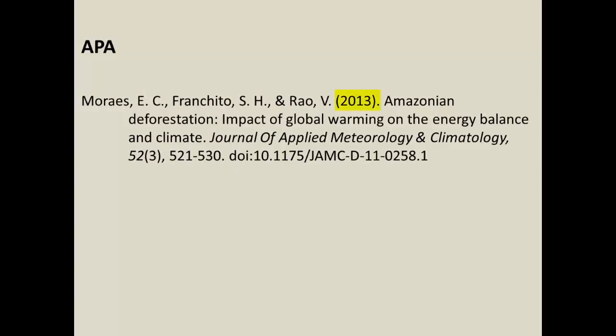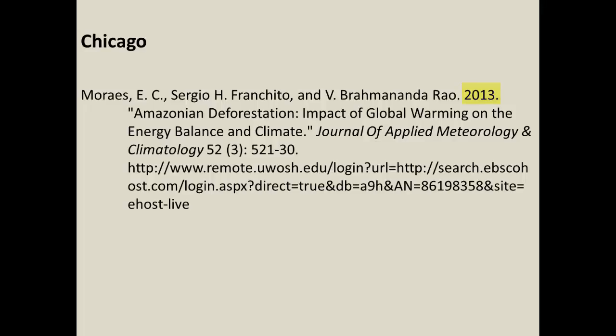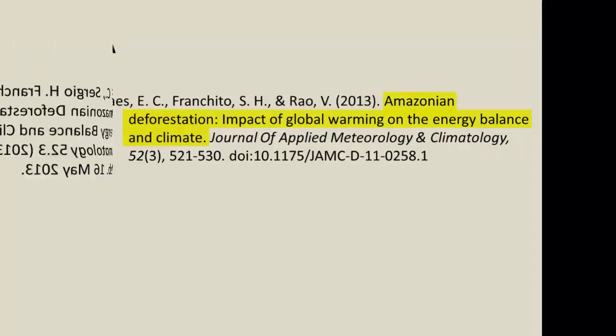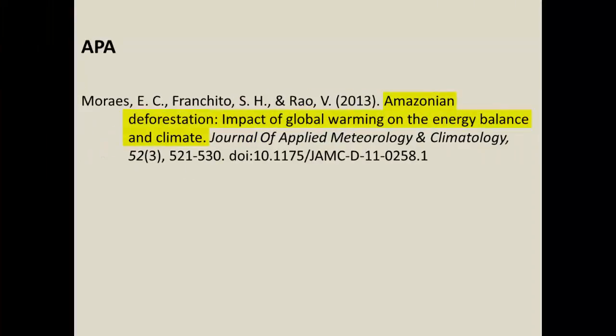Next up, in APA format and Chicago format, is the year in which the article was published — 2013. MLA also cites the year the article was published, but it's in the middle of the citation rather than near the beginning. All three citation styles cite the title of the article next: "Amazonian Deforestation: Impact of Global Warming on the Energy Balance and Climate."